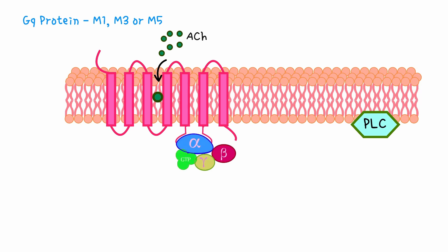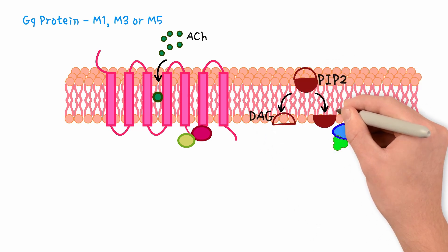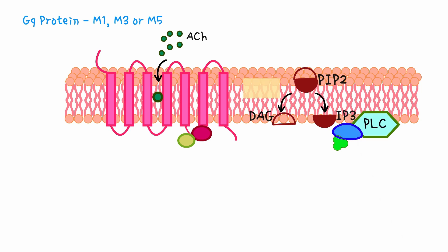GDP is exchanged for GTP. The activated alpha subunit leaves the receptor and directly activates membrane bound phospholipase C-beta. PLC cleaves membrane lipid PIP2 into 2 second messengers, diacylglycerol, and inositol triphosphate.